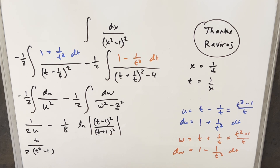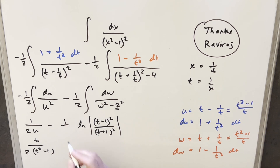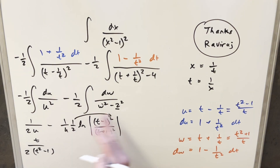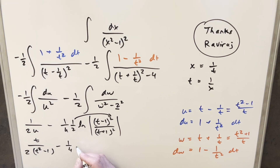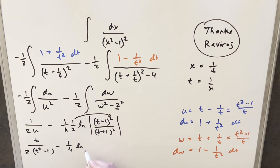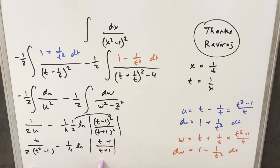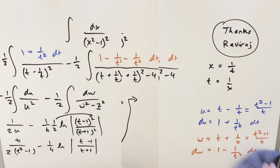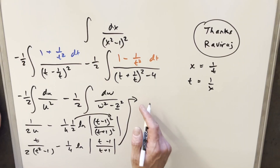Taking this expression and plugging it back in, what I'm really trying to do is match my solution from the other video. I can break this up: 1/8 times natural log of |(t minus 1)/(t plus 1)| squared becomes, by taking 1/2 into the exponent, minus 1/4 times natural log of |(t minus 1)/(t plus 1)|. So we have everything back in terms of t, but now we need to get back to x.